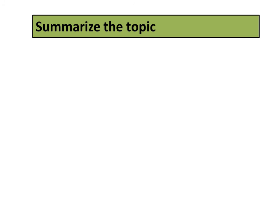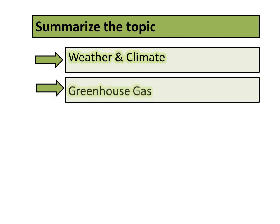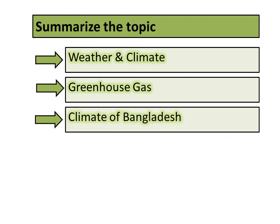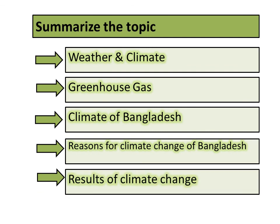Let's summarize today's topic. Today we have learned about weather and climate, greenhouse gases, climate of Bangladesh and its characteristics, climate change and the reasons for climate change in Bangladesh, and the results of climate change. I hope you all have understood these topics. Students, you have already received a worksheet on the website — please solve this worksheet.